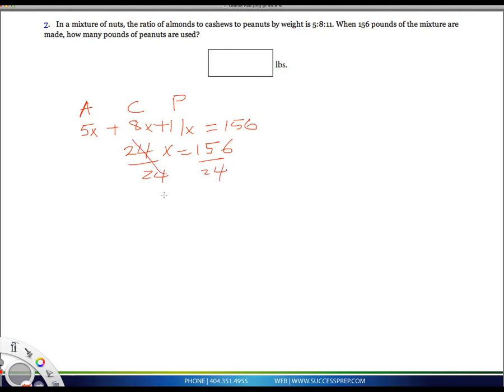24 goes away, X is 6.5. Now that X allows me to figure out what exactly the peanuts are.